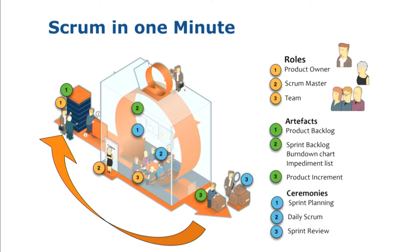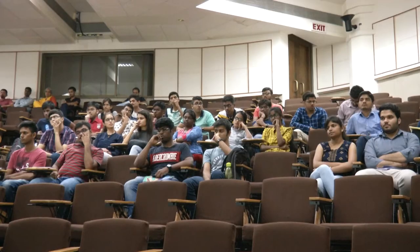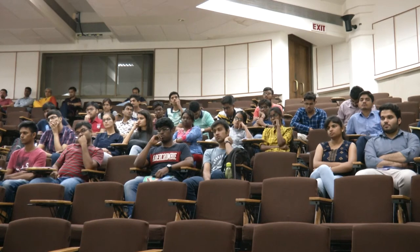Then there are certain artifacts: a product backlog, a sprint backlog, and a product increment. There are also certain ceremonies: sprint planning, daily Scrum, and sprint review. These roles are part of your team — supposing six people form a team. One person is the Product Owner, the one sitting next to them is the Scrum Master, and the rest is the team.